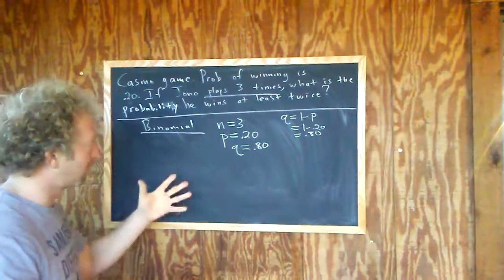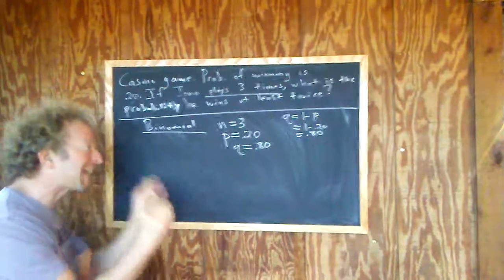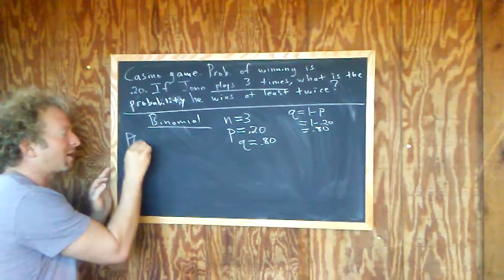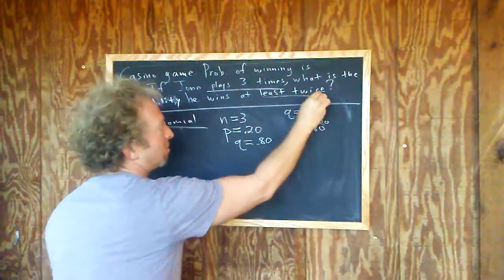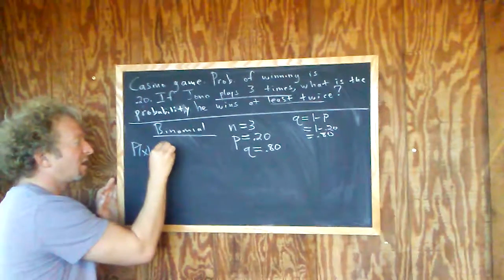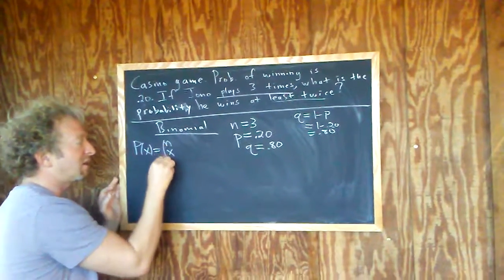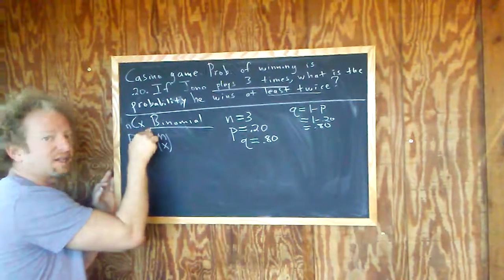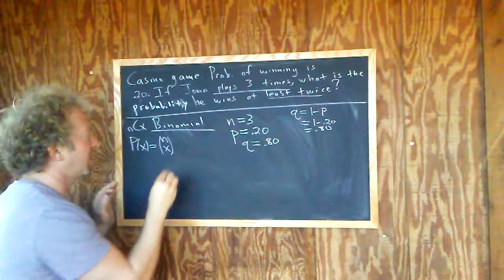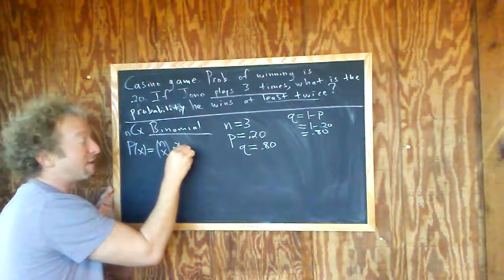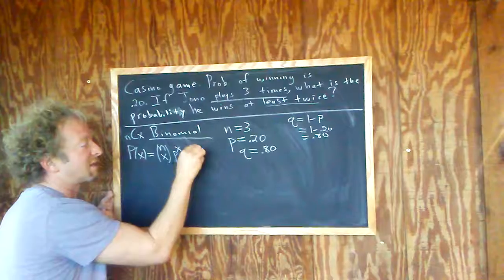Okay, now we have to write down the formula. So the probability of exactly X wins. So exactly X wins. That's not what we want here. We want at least two. But if it was exactly X, it's equal to N choose X. Okay. That's also written like this. Maybe you've seen it like this. So N choose X. It's the combinations formula, right? Times P to the X times Q to the N minus X.